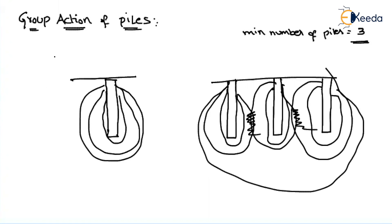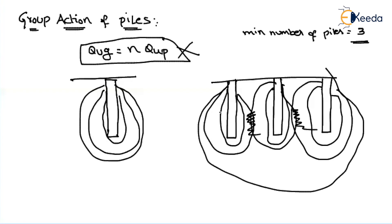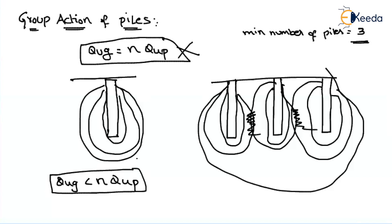In a group action of piles, we should not say that the total capacity is equal to the number of piles times the single pile capacity — that is not the same. Because if it is a group action of piles, the stress isobars will overlap. As the stress isobars overlap, we should not take the group capacity as simply n times Q_p. The pile group capacity should not be considered exactly as n × Q_p, because the stress isobars are interfering with each other. Also, while installing the piles, there may be disturbance to the surrounding soil. That is why in general, group capacity is always less than n × Q.